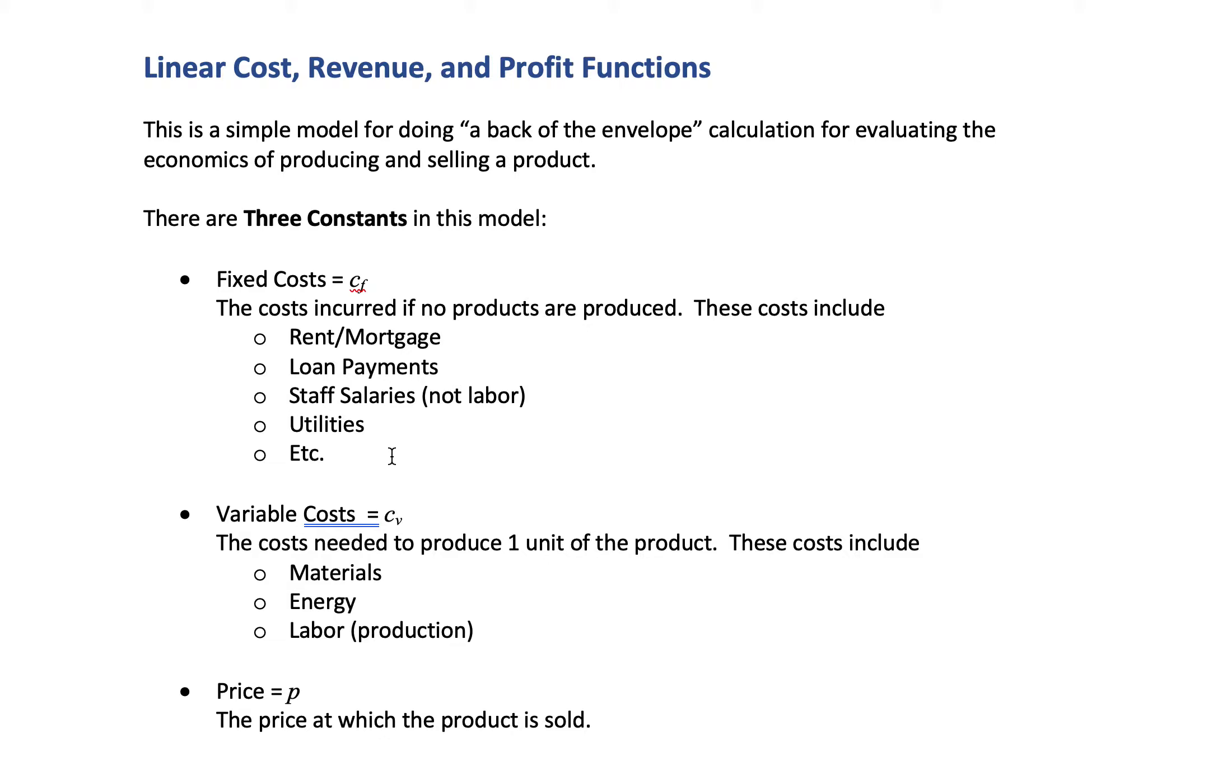Then there's variable costs, C sub v. These are the costs needed to produce one unit of the product. These costs include materials, energy, and labor. If I'm producing some gadget, how much raw materials go into it, how many procured sub-assemblies, how many labor hours are required to process and assemble the thing, and if it's energy intensive, how much energy is required.